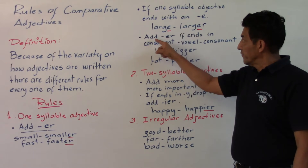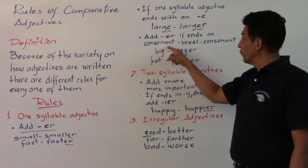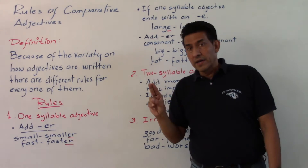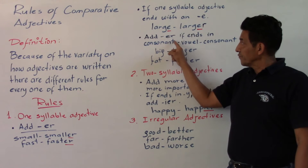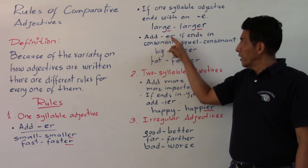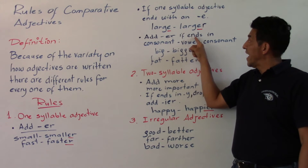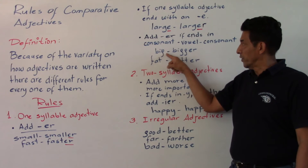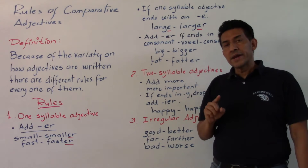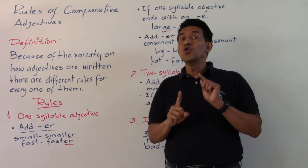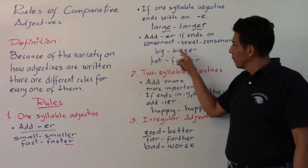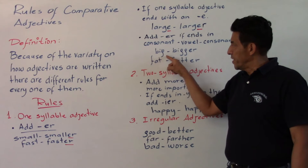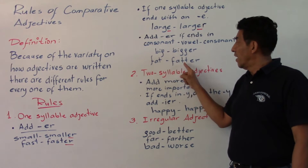Another form is when the adjective ends in consonant-vowel-consonant. In this case, we must double the last consonant and then add -ER. For example: big → bigger.